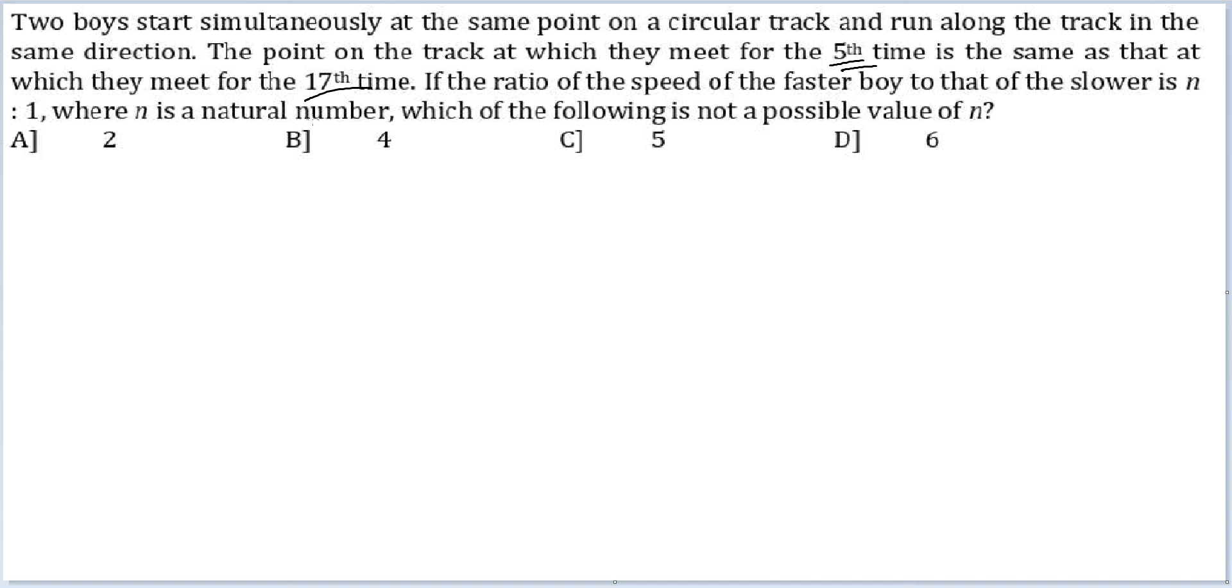Because they are meeting at the 5th time and the 17th time at the same point, 12 meetings have passed in between. Therefore, the number of distinct meeting points should be a factor of 12.